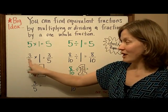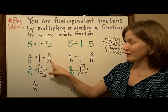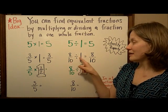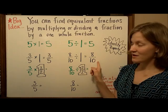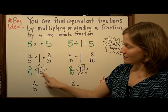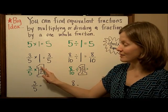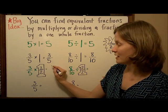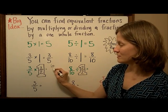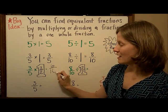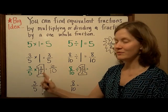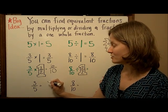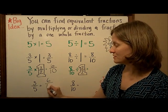So likewise, if we take a fraction and multiply it by one — three-fifths times one — we're going to get the same answer; it doesn't change the number. So if we take a fraction equal to one whole, for example two-halves, and multiply — three times two on the numerators gives six, and five times two is ten — we get six-tenths. But if I know I'm multiplying by one, that means what I started with and what I ended with are equivalent fractions. So three-fifths is equal to six-tenths.